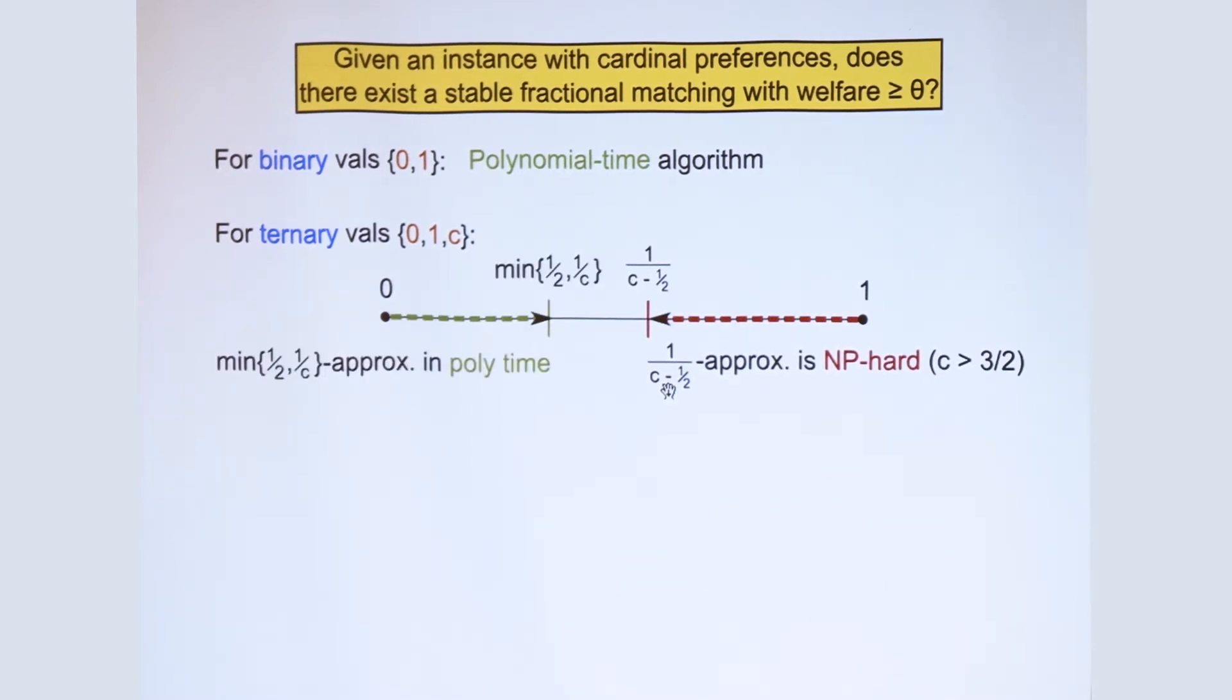But not all is lost, so we have some positive news. It is possible to achieve an approximation ratio of 1 over C or 1 over half, whichever is less, in polynomial time.